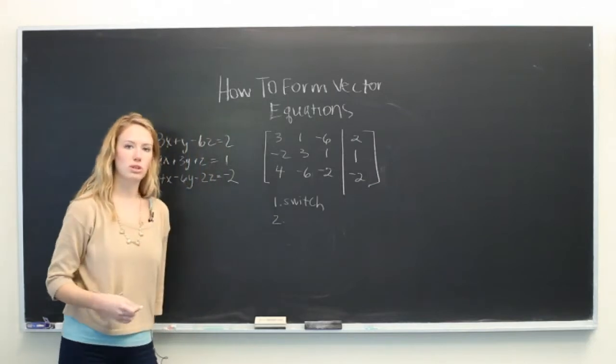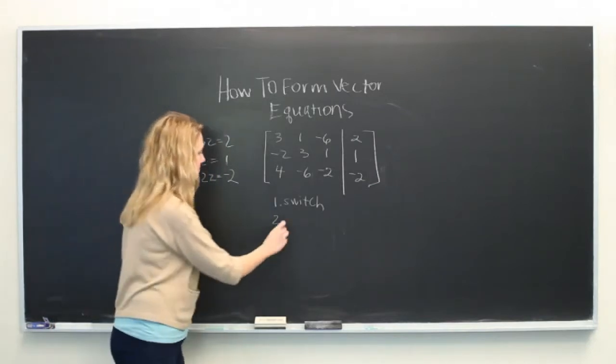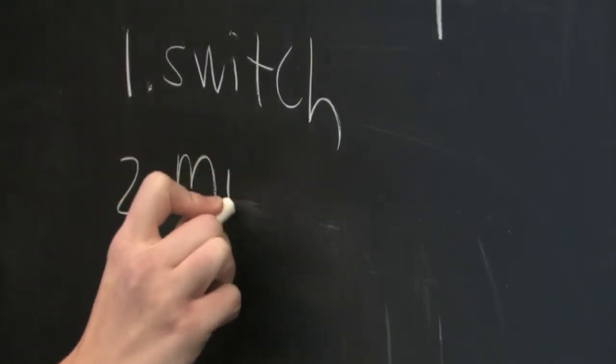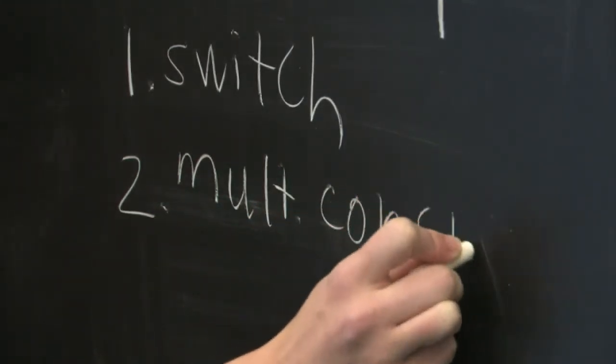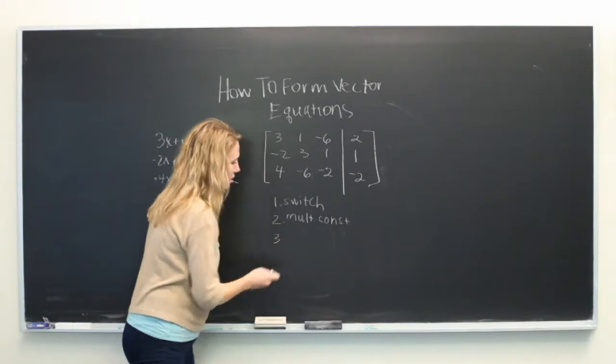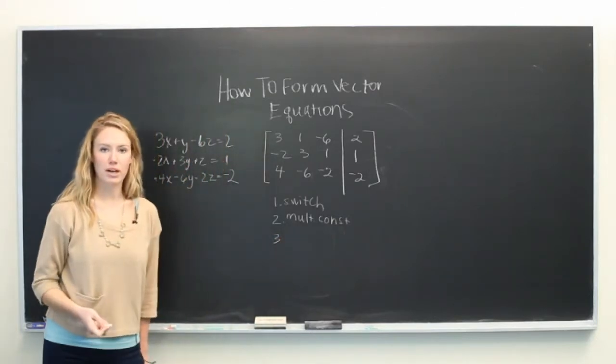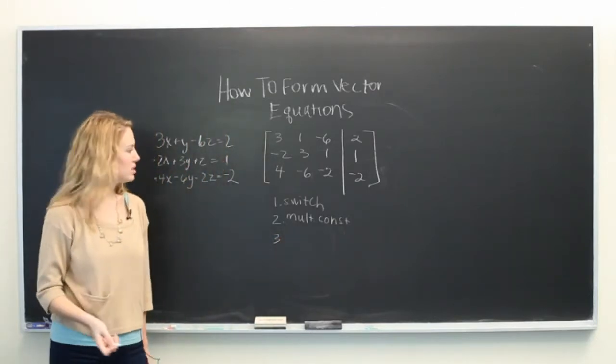The second is to multiply a row by a constant. And the third is to multiply a row by a constant and add or subtract it to a different row.